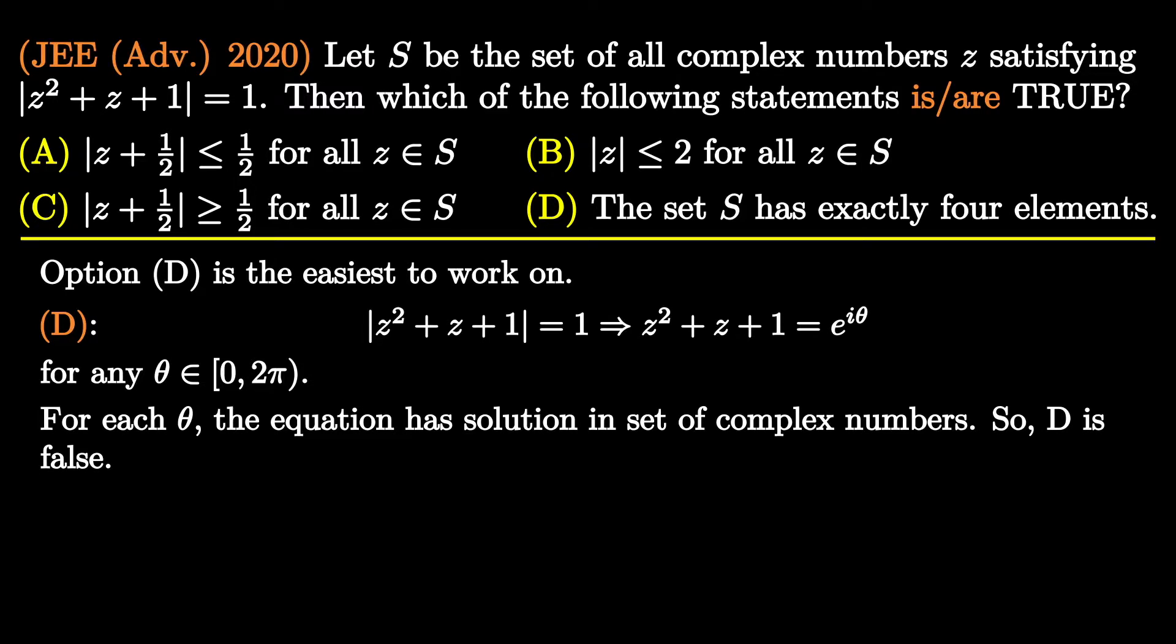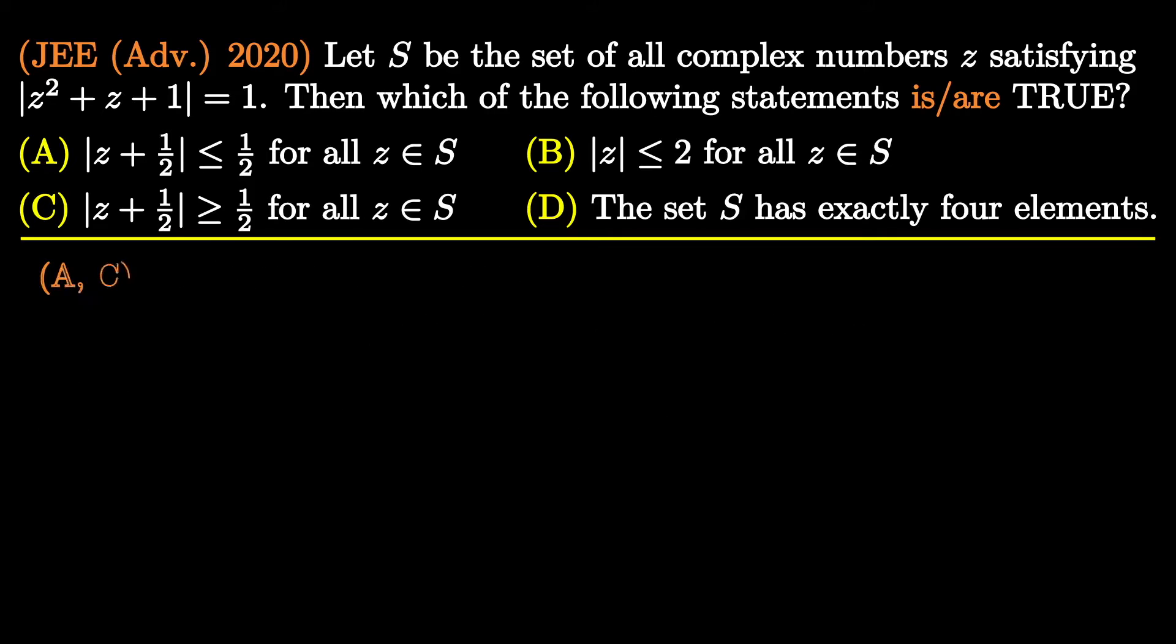Now we move to options A and C. It is clear that both of these options cannot be correct. Since we need the interval for |z + 1/2|, we complete a square, and the given condition is equivalent to |z + 1/2|² + 3/4 = 1. Now what? How can we move forward?